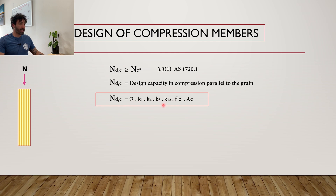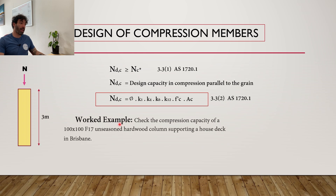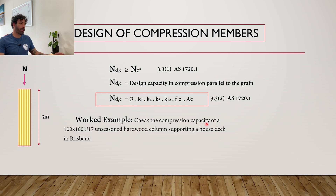Don't freak out with all these k-values because they're easy. We're going to go through this numerical example and I'll explain all these factors as we go. The example is to calculate the compression capacity of a three-metre high, 100×100, F17 unseasoned hardwood post in Brisbane.